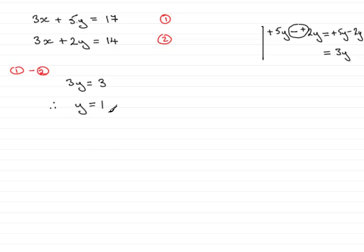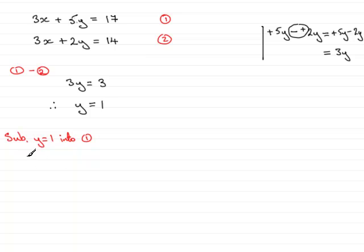Now when we have one of the values — in this case y equals 1 — we need to find the other value, x. We can do that by simply substituting y equals 1 into either equation 1 or equation 2. It doesn't matter which one you do, you should get exactly the same answer. So I'll substitute — I'll write 'sub' for short — substitute y equals 1 into equation 1. If we do that, we have 3x plus 5 times y, so that's 5 times the y value which we know is 1, and we're told that equals 17.